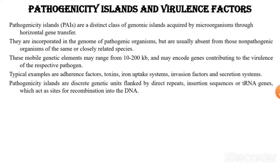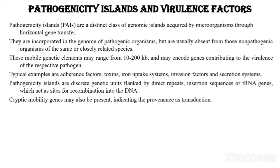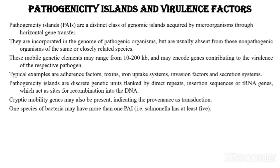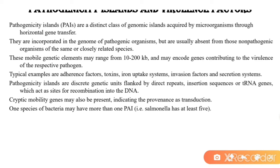Pathogenicity islands are discrete genetic units flanked by direct repeats, insertion sequences, or tRNA genes, which act as sites for recombination into the DNA. Cryptic mobility genes may also be present, indicating the prevalence of transduction. One species of bacteria may have more than one PAI. Pathogens should have pathogenicity islands so they can express their virulence factors and establish themselves in the host.